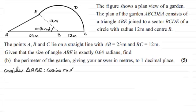So for the cosine rule, AE squared equals the sum of the squares of the other two sides: 23 squared plus 12 squared. Then we subtract twice the product of these two sides, 2 times 23 times 12, multiplied by the cosine of the opposite angle to side AE, which is 0.64 radians.